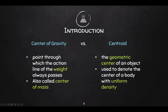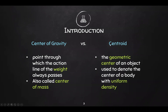Centroid is the geometric center of an object. From these definitions you can already see the difference: center of gravity is more of a physical property while centroid is more of a geometrical property. To solve for center of gravity, I need properties like weight, density, and mass. For centroid, all I need are the dimensions of my object.